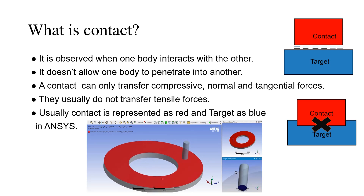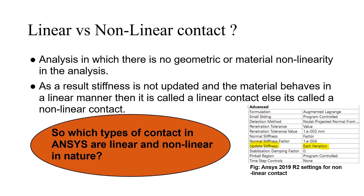In mechanical contacts, there may be geometric or material non-linearity, as a result of which the stiffness changes readily. These types of contacts are called nonlinear contacts. If there is no geometric or material non-linearity, it is called a linear contact. Generally, the problems we face will have nonlinear contact. ANSYS gives us the opportunity to define our contact as either linear or nonlinear.